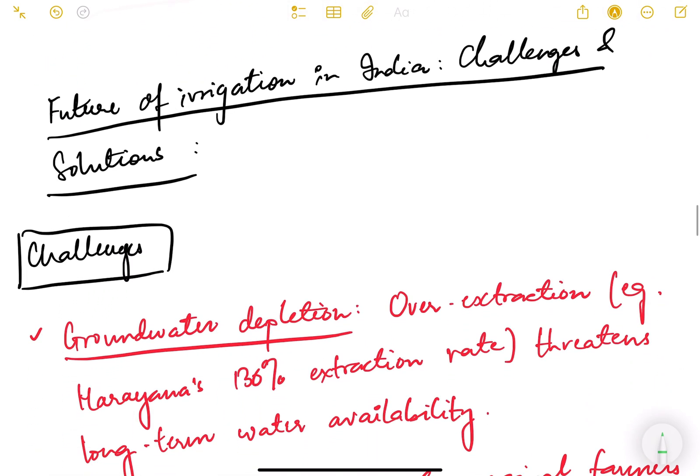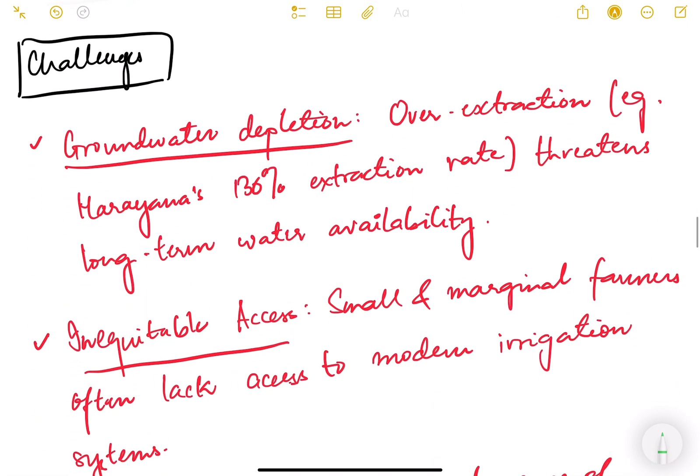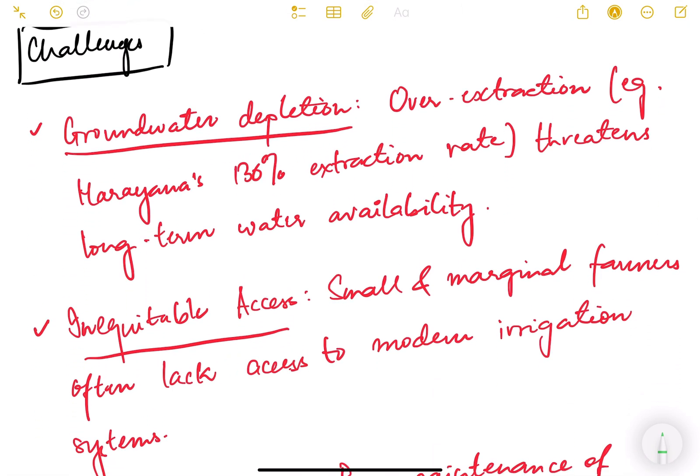Then what is the future of irrigation in India? What are the various challenges and solutions going ahead? The first one is groundwater depletion. This is already going on but in future we will face this challenge even more. There is over extraction, for example Haryana 136 percent is the extraction rate. It threatens long term water availability. Already there are water stressed areas in Punjab where 14 districts have been declared critically affected. That is a major problem.